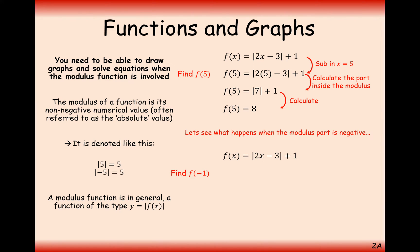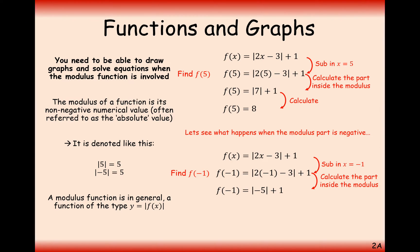Now take the same function and substitute in minus 1. Replace x with minus 1, we get minus 2 minus 3 is minus 5 inside that bracket. Because minus 5 is a negative number, the modulus brackets make it positive. So we get f of minus 1 is 5 plus 1 which makes it 6.